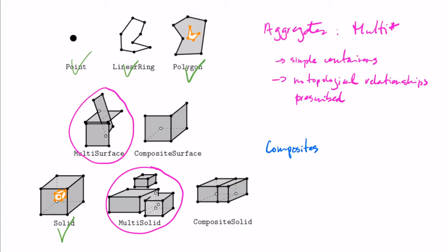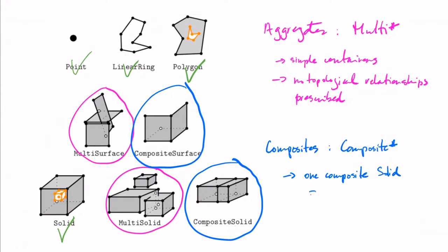We can also combine different primitives of the same dimensionality into a composite. Composite is different in that it enforces topological relationships. The main one is that the different parts of a composite cannot overlap. So if we have a composite solid formed of two solids, these solids cannot overlap, and also they are not allowed to be disjoint.